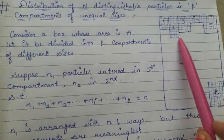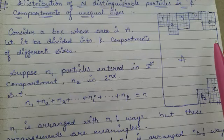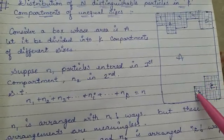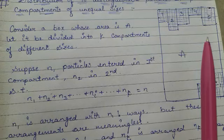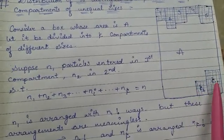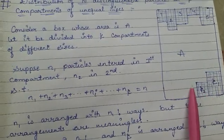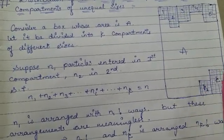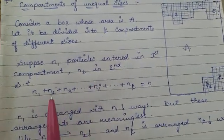The area is A and the number of boxes generated are of unequal size. We have K compartments. For example, we have to place N1 particles in the first compartment, N2 in the second compartment, and so on.